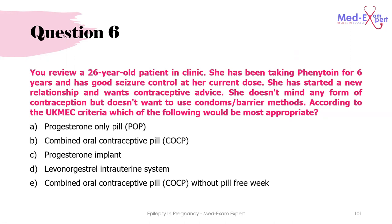Practice question 5: A 26-year-old patient on phenytoin for six years wants contraceptive advice and does not want barrier methods. According to the UK Medical Eligibility Criteria, which is most appropriate? The answer is D: the levonorgestrel intrauterine system (Mirena), because phenytoin is an enzyme-inducing drug. Note that if choosing between Mirena and a copper IUD, Mirena is the better option as it has lower side effects such as heavy menstrual bleeding.